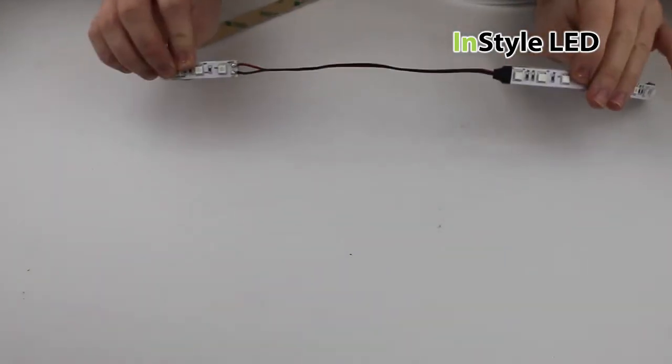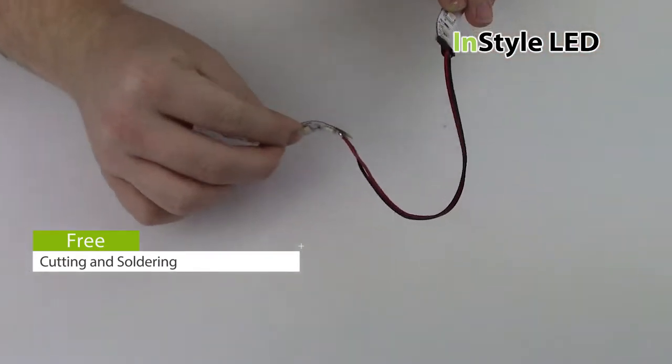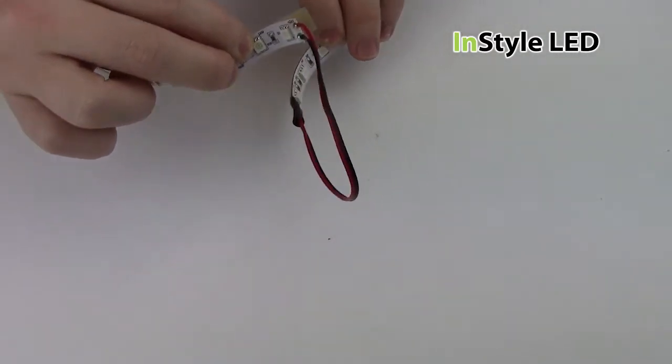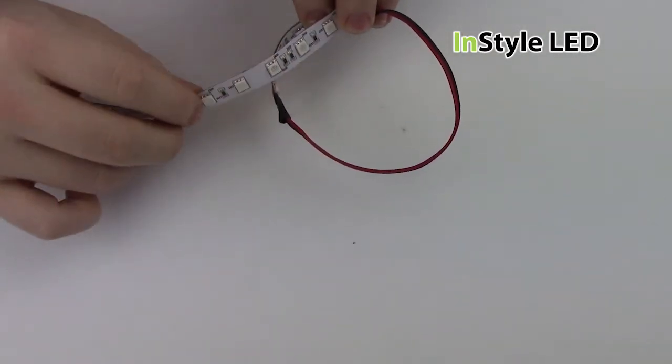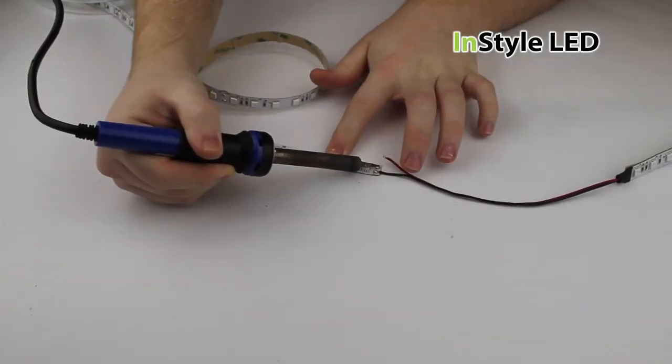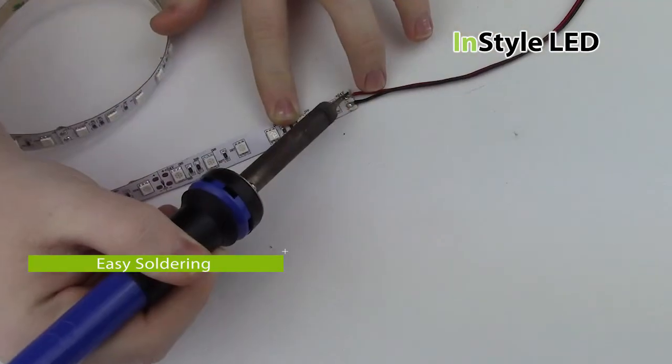Alternatively you can provide InStyle with your specific lamps and we can cut and solder the LED tape to those for you, even soldering in link cables. If you are capable of soldering you can easily achieve this yourself.